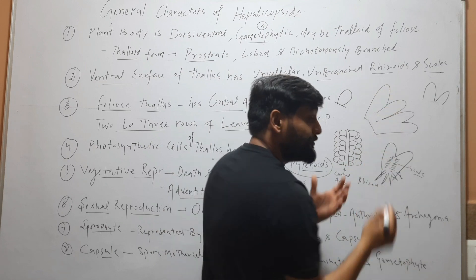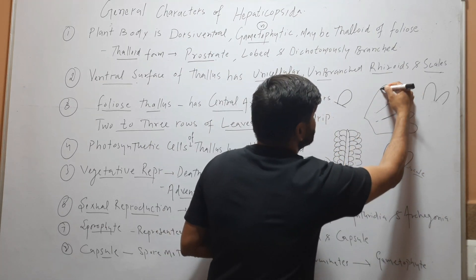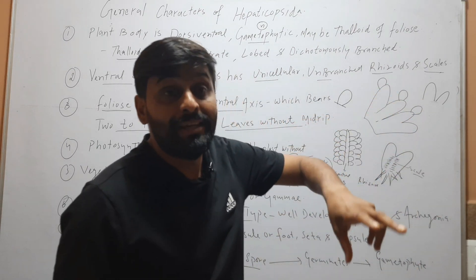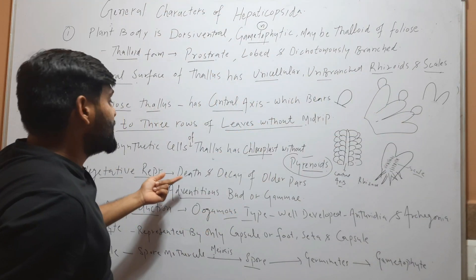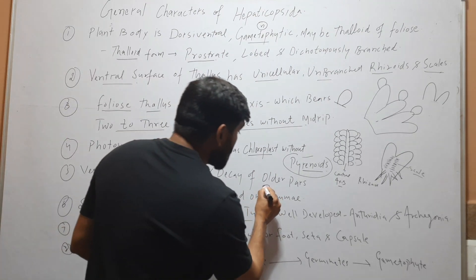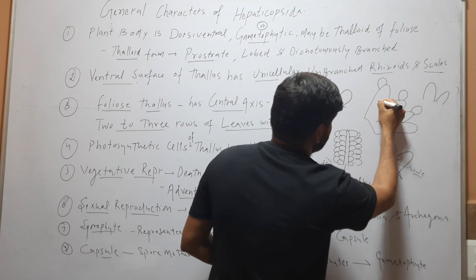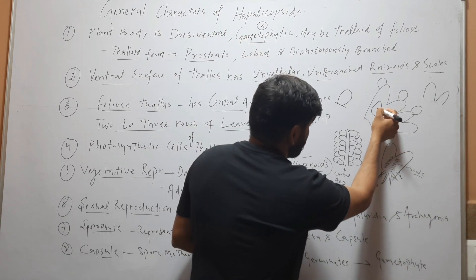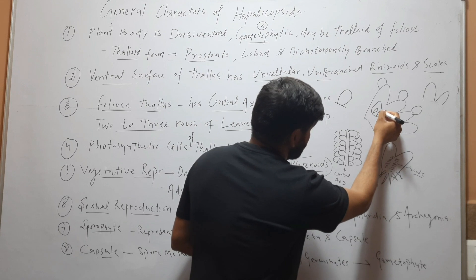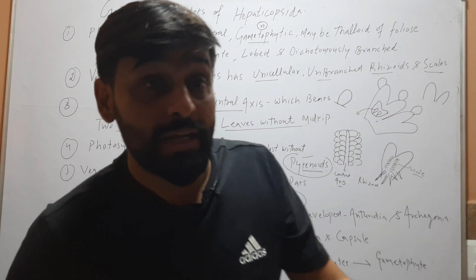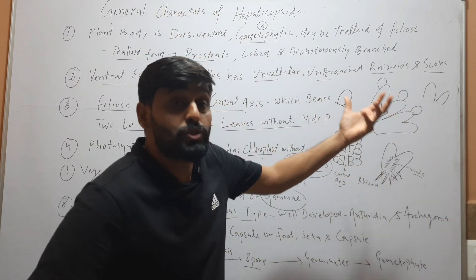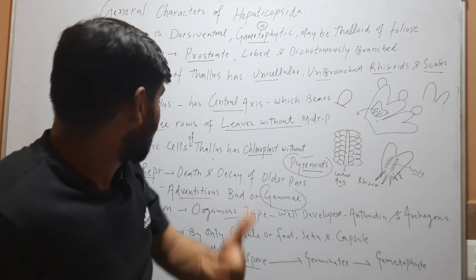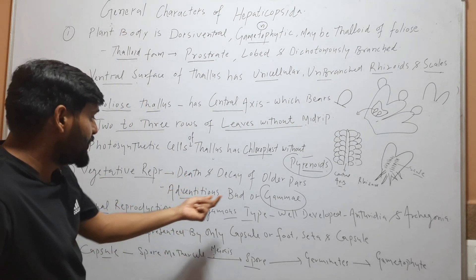Some adventitious buds arise on the dorsal side of the thallus. When these buds detach from the body, they form new thalli — these are called adventitious buds. Vegetative reproduction may also occur through gemmae, which are cup-like structures present on the dorsal surface of the thallus. These gemmae cups contain gemmae inside them, and when the gemmae are released they can form new thalli. So vegetative reproduction occurs through death and decay of older parts, adventitious buds, or gemmae.